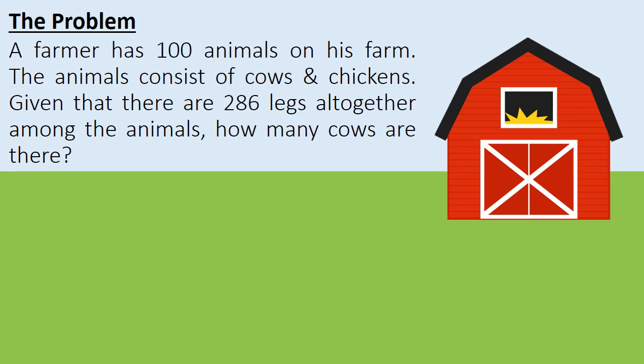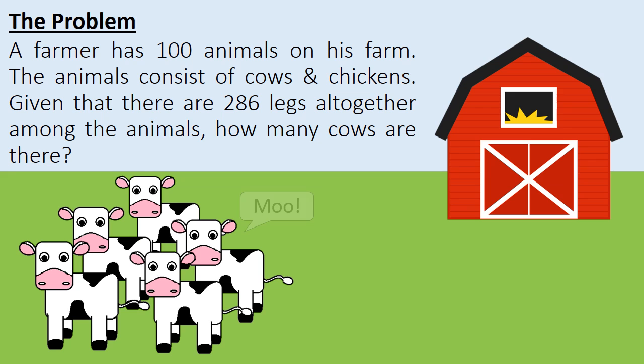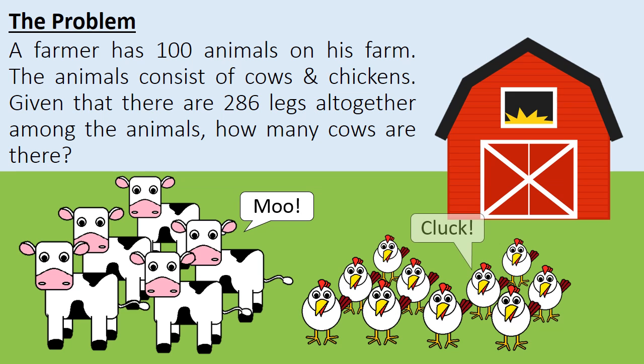The problem goes like this. A farmer has 100 animals on his farm. The animals consist of cows and chickens. Given that there are 286 legs altogether among the animals, how many cows are there?